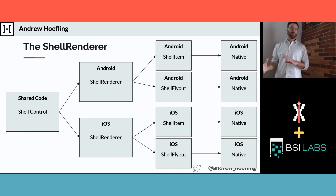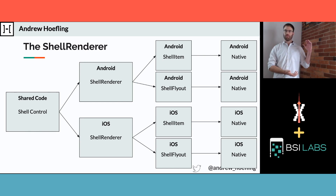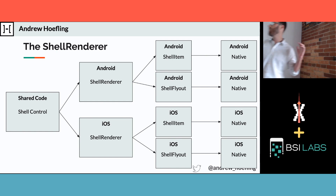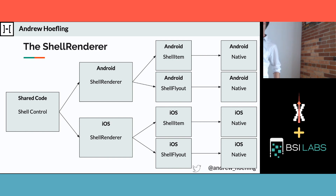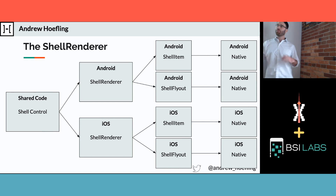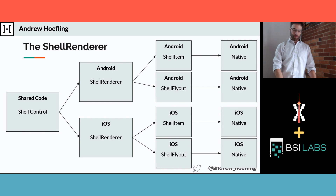They added extra steps because this is a large abstraction layer sitting on top of your native code. They wanted a way where you can say: I want to use everything from shell, but I only care about customizing my fly-out — I don't want to use the shell fly-out. So you can still use everything from shell and just change that one piece.